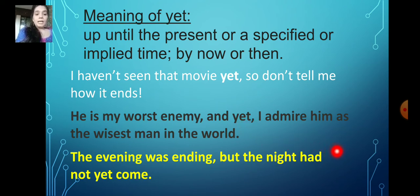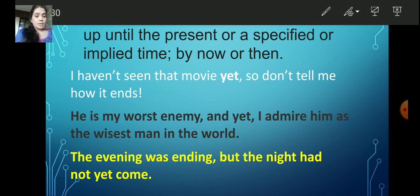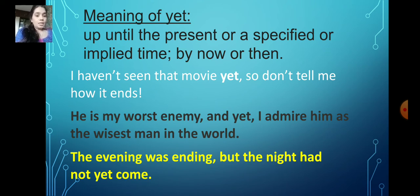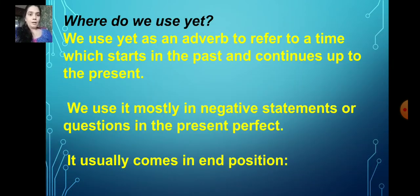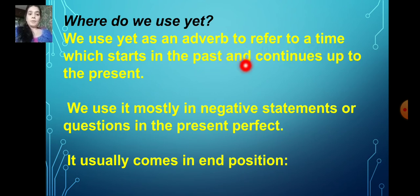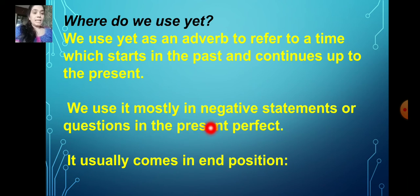The last example: the evening was ending, but the night had not yet come — so the evening was going to end, but in the present, the night had not yet come. So these are the uses of 'yet.' We use 'yet' as an adverb to refer to a time starting in the past and continuing up to the present, mostly in negative statements or questions in the present perfect.